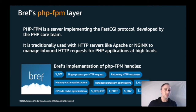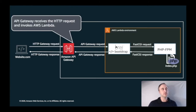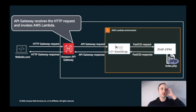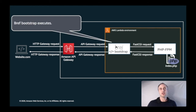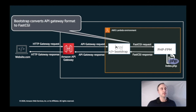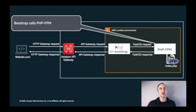Most PHP frameworks are built around these FPM features, which makes this a really good runtime to transition from server hosting to serverless hosting without changing too much about the way you build your application. Here's a high-level architecture of what the Bref layer is doing: first, API Gateway receives the HTTP request and invokes a Lambda function. The Lambda function environment then executes the bootstrap for the Bref-based runtime, and Bref converts the HTTP request from the API Gateway format to the FastCGI format.